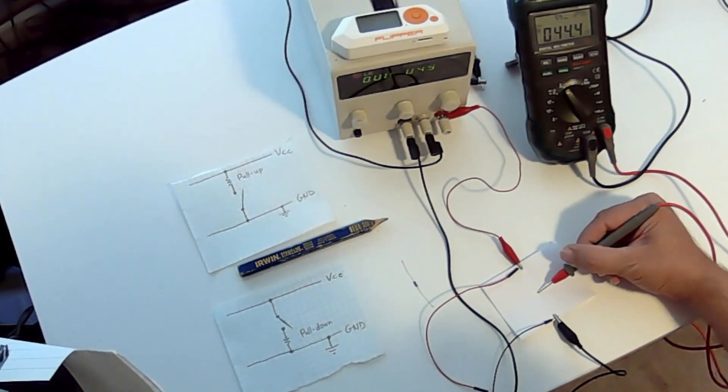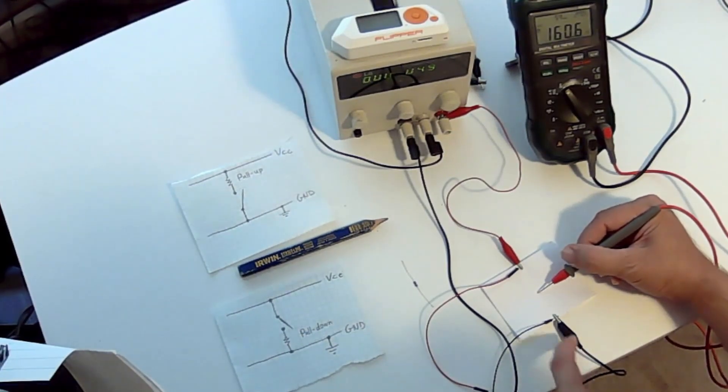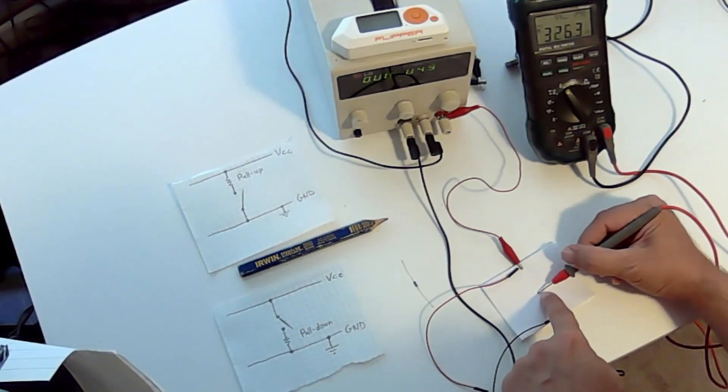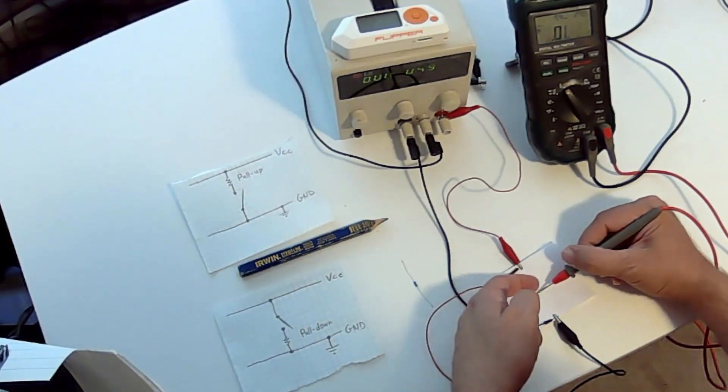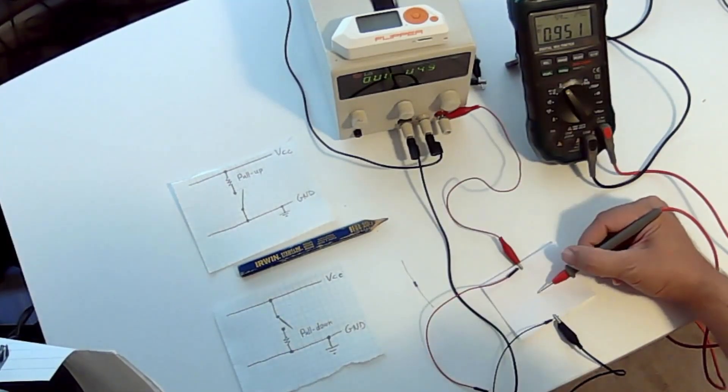So now I wanted to look at what happens when we don't have a pull-up or a pull-down resistor. So here, we don't have a resistor going from ground, pulling it down to our point. And we don't have a resistor from VCC pulling it up. And you can see our voltage is just kind of jumping around.